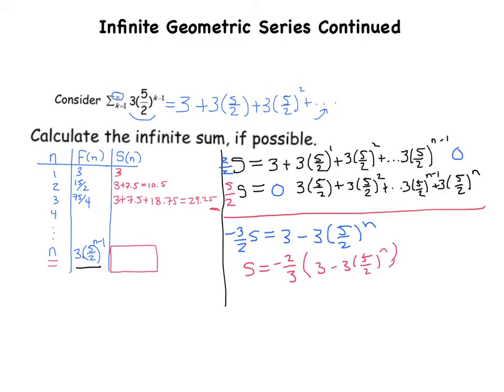For aesthetic purposes, let's distribute the negative 2 thirds to get that fraction out of there. Distributing to the 3, it becomes negative 2, because those 3s cancel. And then negative 2 thirds times this negative 3 times 5 halves to the n — the 3s divide out and you get positive 2 times 5 halves to the n. So we can leave it like this. That is our expression.